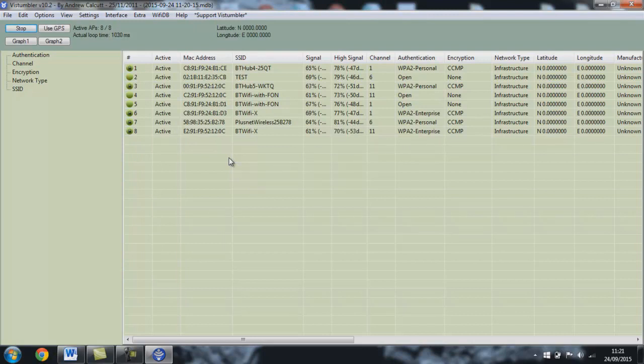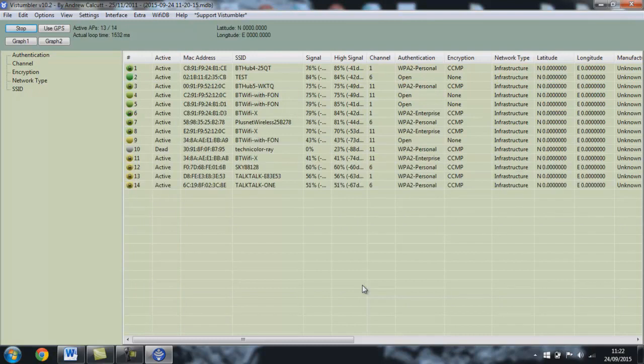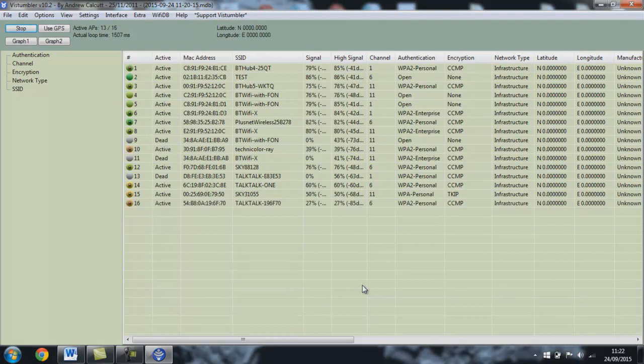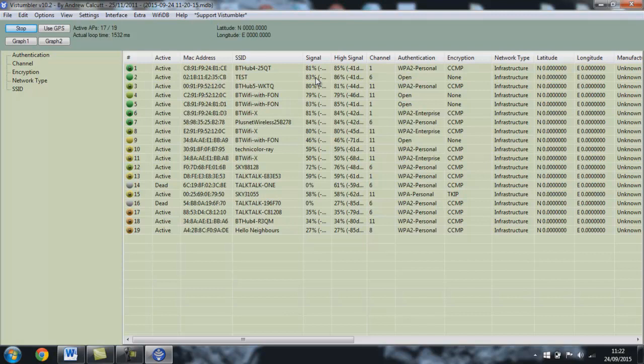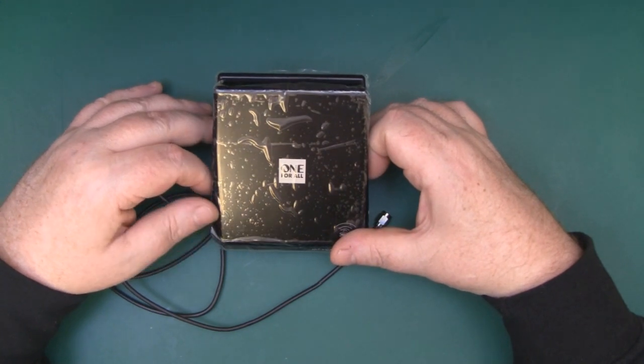I'll disconnect the one for all one and put the simple dipole antenna on so we can get a comparison. The dipole antenna is performing much better than this directional one for all antenna. The test router has jumped up into the 80s, around the mid 80s. A directional antenna should really perform much better than a simple dipole antenna. I wasn't very impressed with that test at all.